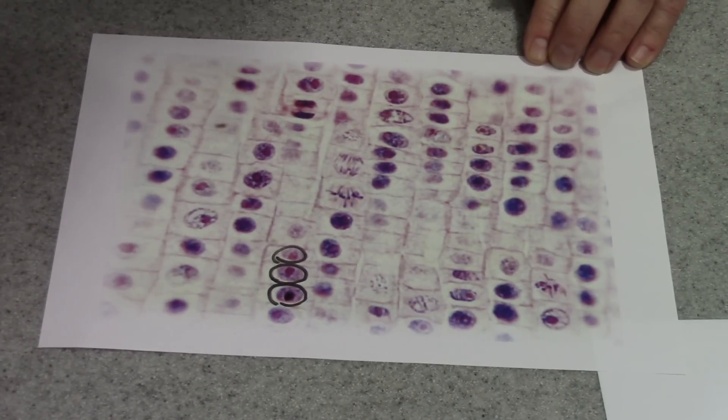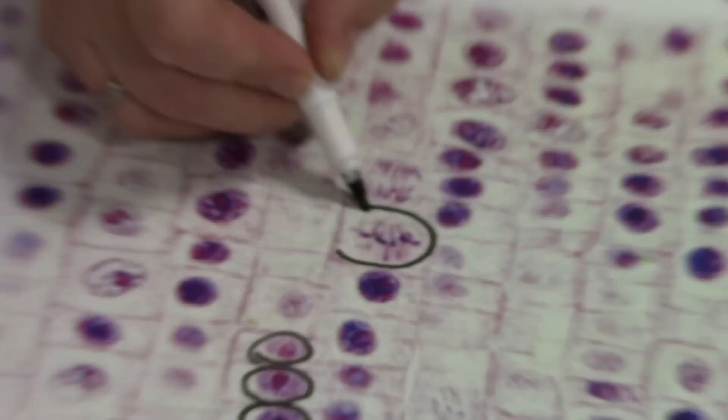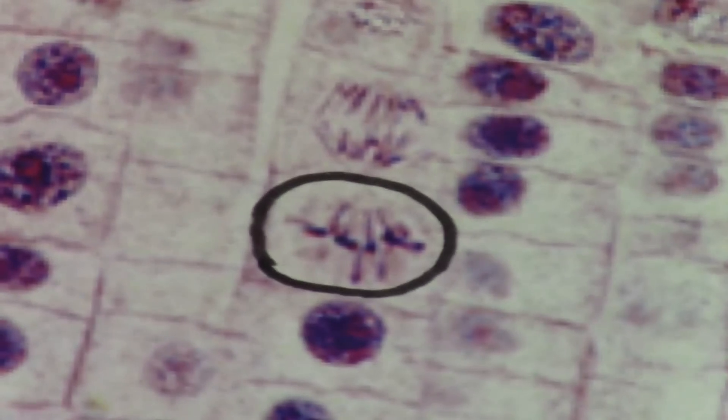If you look carefully, you'll also see cells in different stages of mitosis. For example, here there's clearly something going on along the center of the cell, so that would be a cell in metaphase.